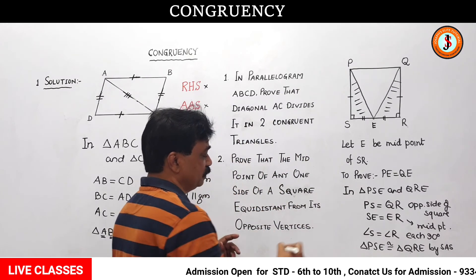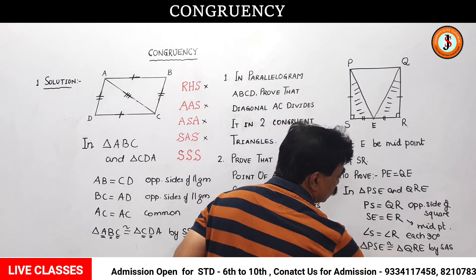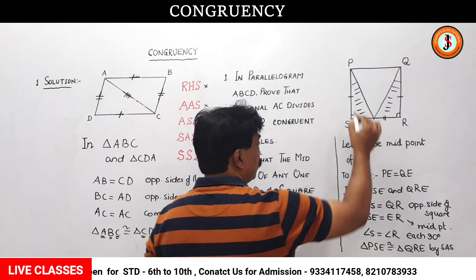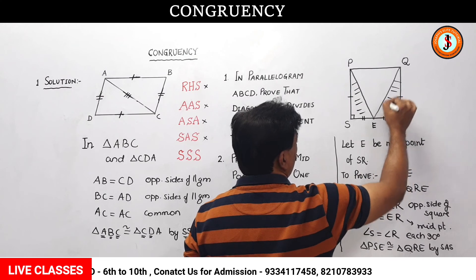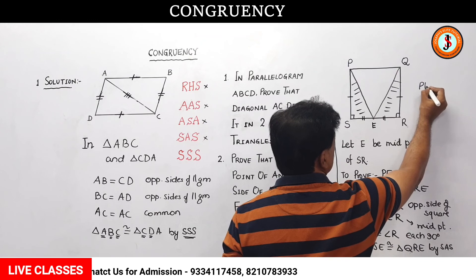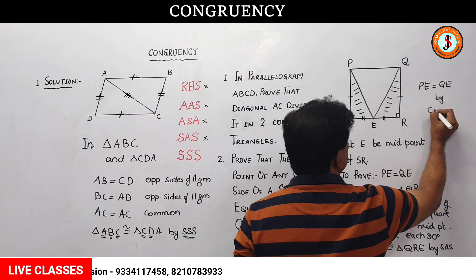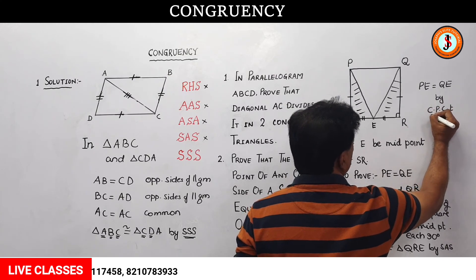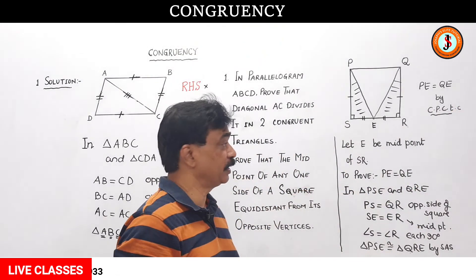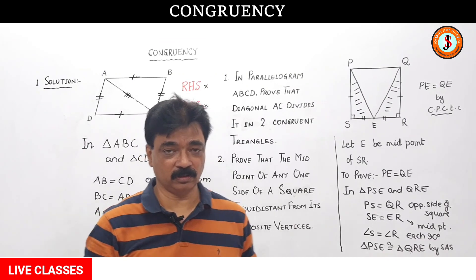By CPCT these sides are equal. Let me write this part once again: triangle PSE is congruent to triangle QRE, which means side PE is equal to side QE by CPCT — corresponding parts of congruent triangles. That is what was to be proved. Thanks a lot; go through this chapter nicely.